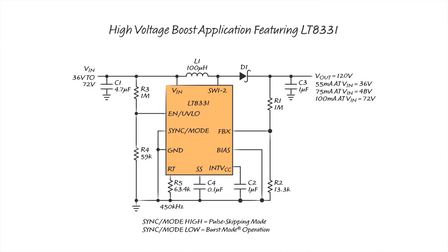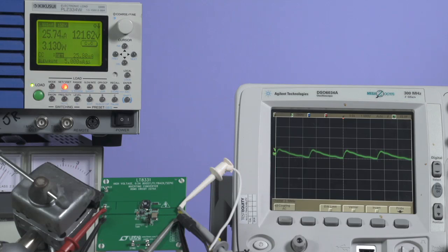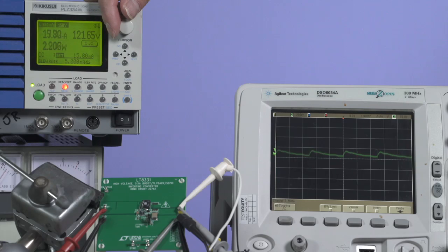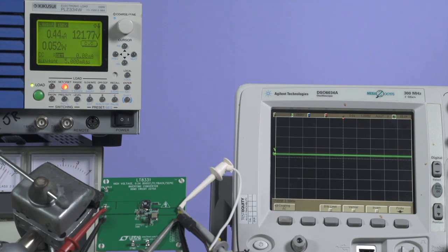This schematic shows a 120 volt boost converter with a 36 volt to 72 volt input. With the sync mode pin tied to ground, the converter enters burst mode operation at light loads, where the switching frequency drops progressively as the load is decreased. Burst mode operation helps to maintain very low output ripple at light loads.